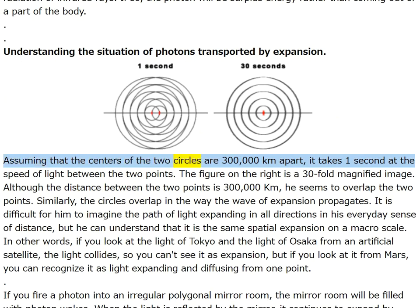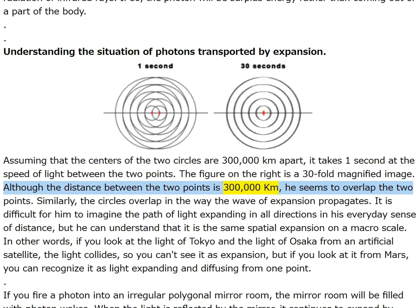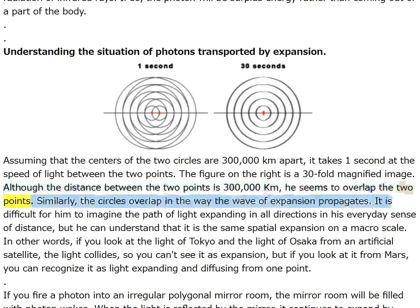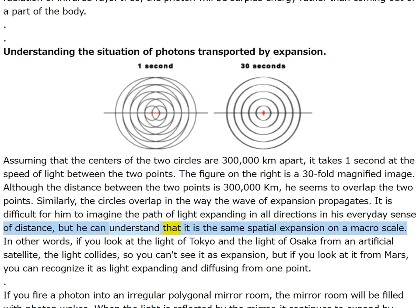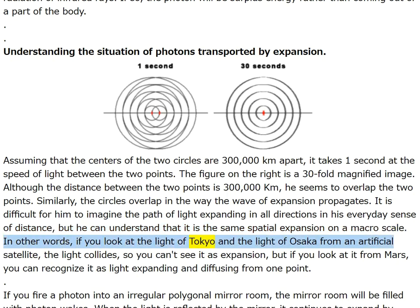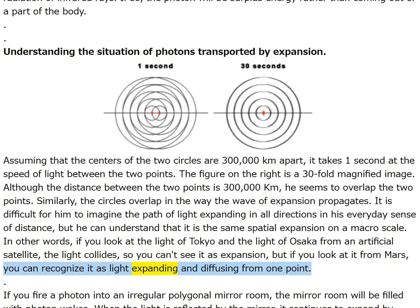Assuming that the centers of two circles are 300,000 km apart, it takes one second at the speed of light between the two points. The figure on the right is a 30-fold magnified image — although the distance is 300,000 km, the two points seem to overlap. Similarly the circles overlap in the way the wave of expansion propagates. If you look at the light of Tokyo and Osaka from an artificial satellite the light collides, but if you look from Mars you can recognize it as light expanding and diffusing from one point.